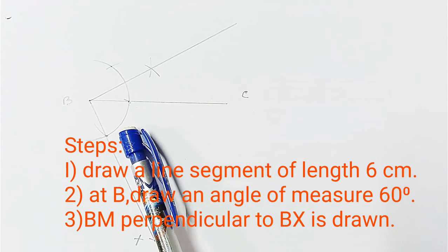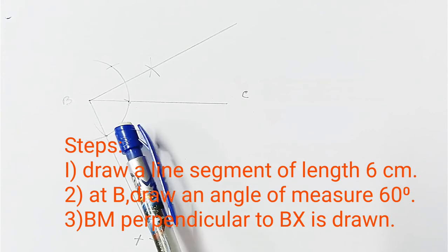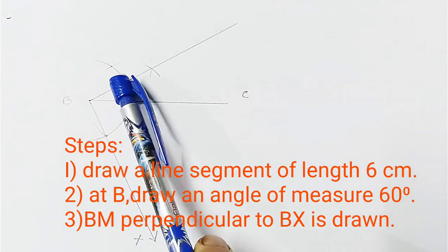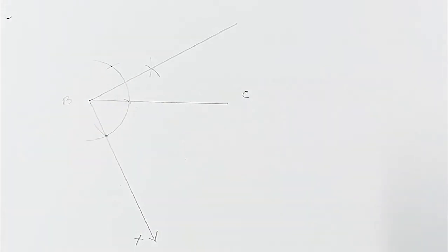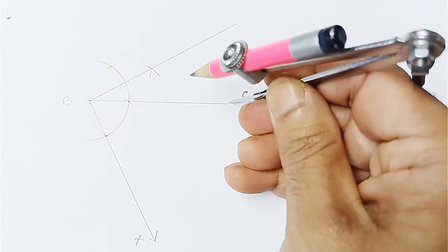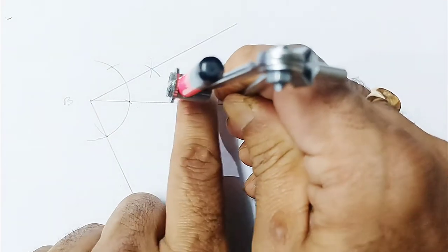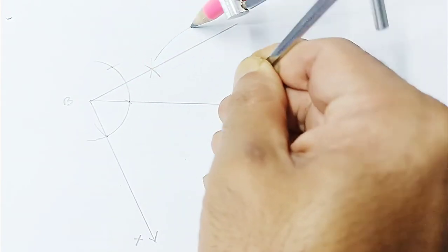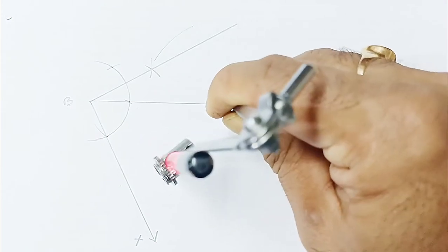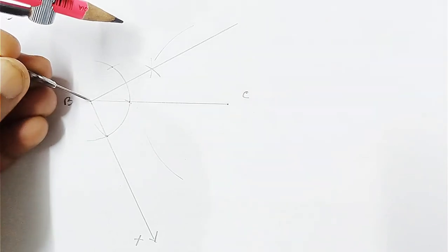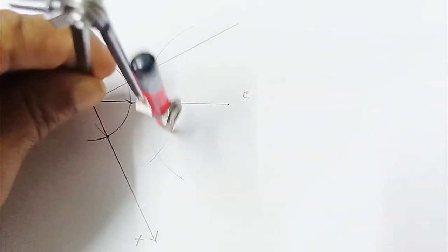As given, angle A is 60 degrees, and on ray BX we draw a perpendicular at 90 degrees. Now we bisect BC. Taking C as center with radius more than half, draw an arc. With the same measurement draw another arc from C, then taking B as center draw two more arcs.